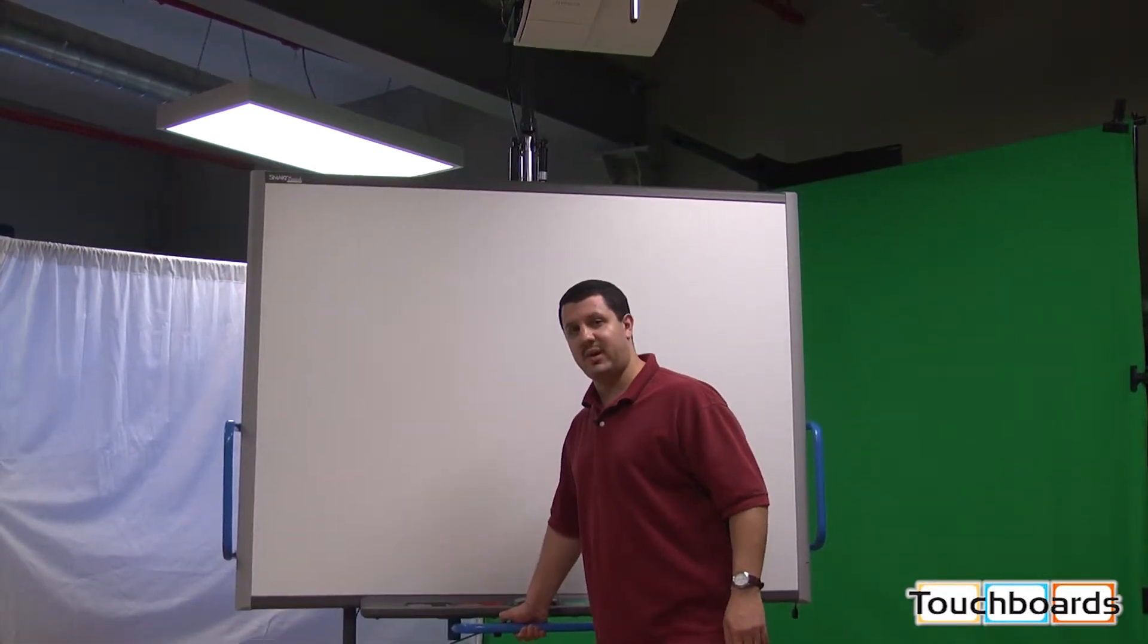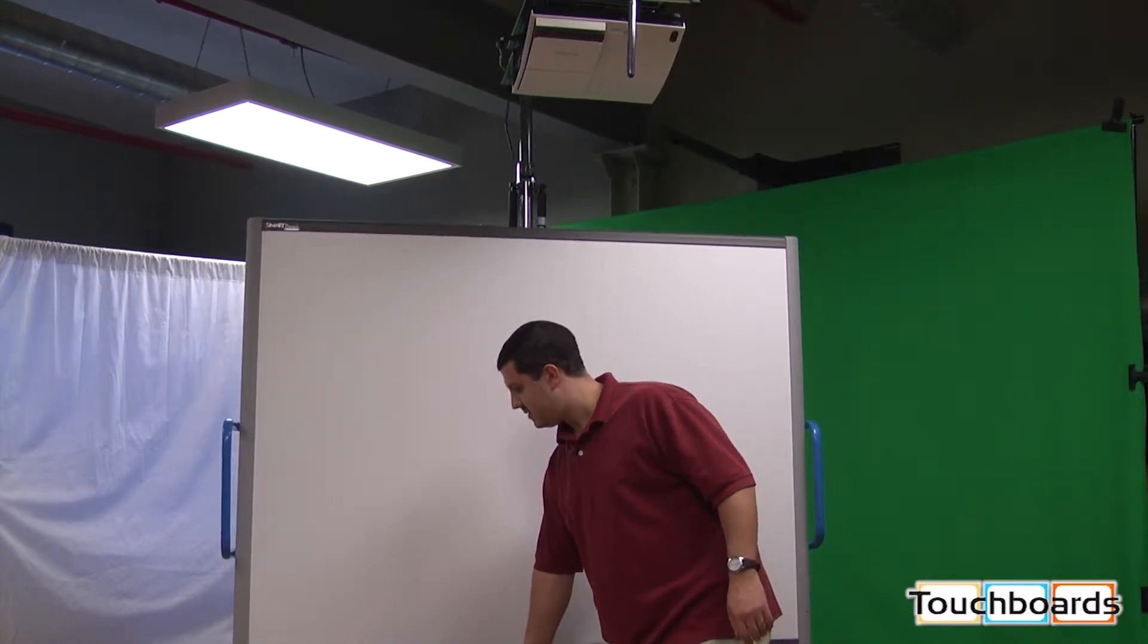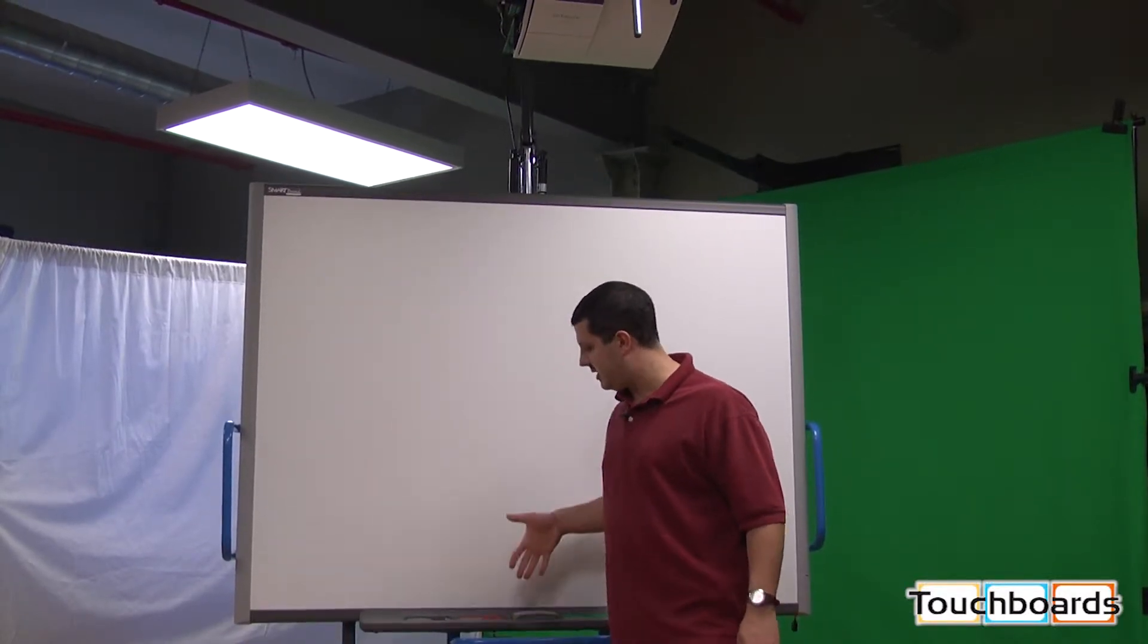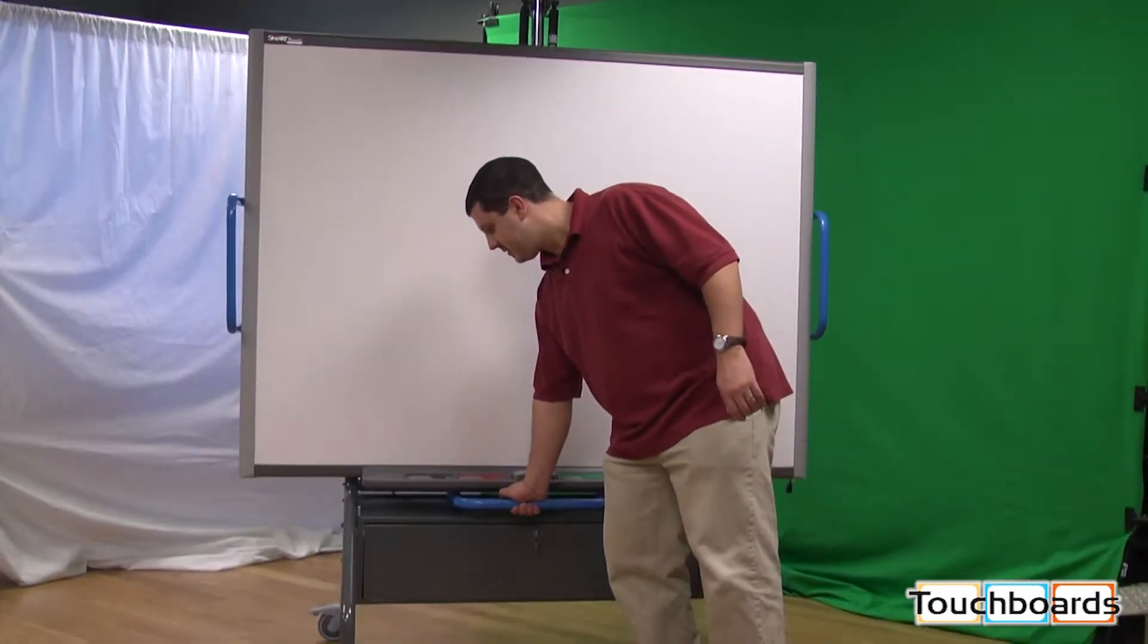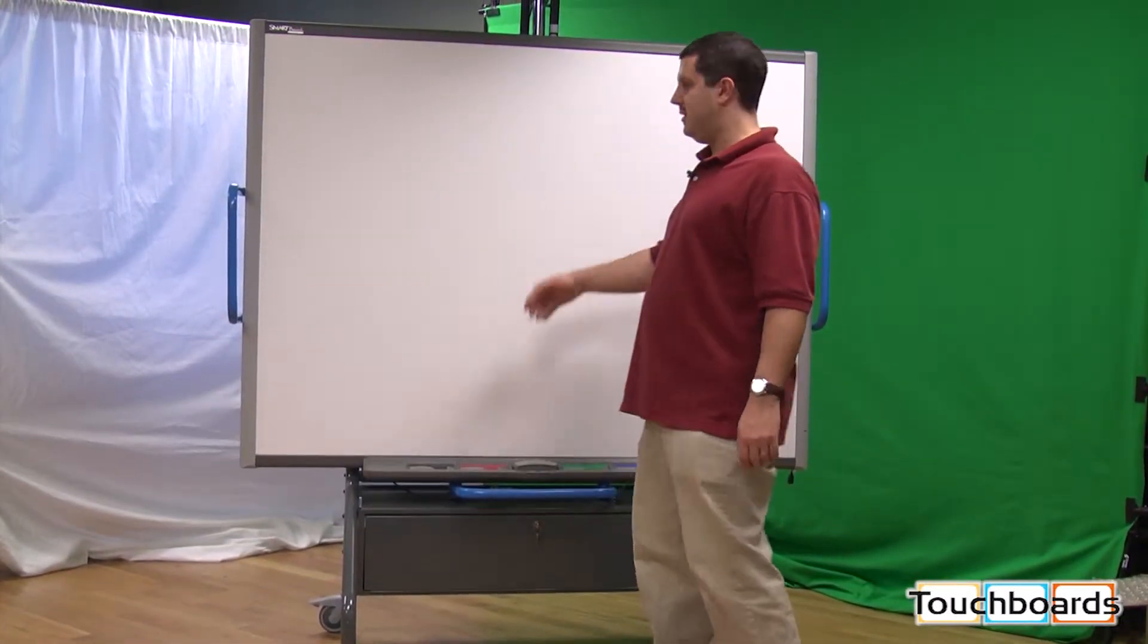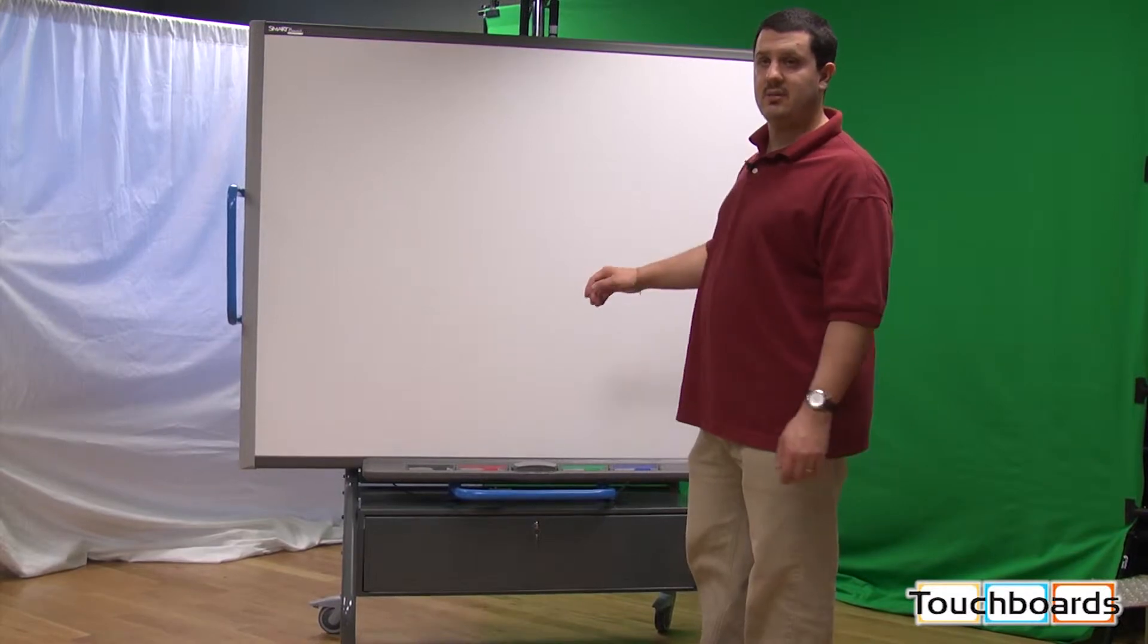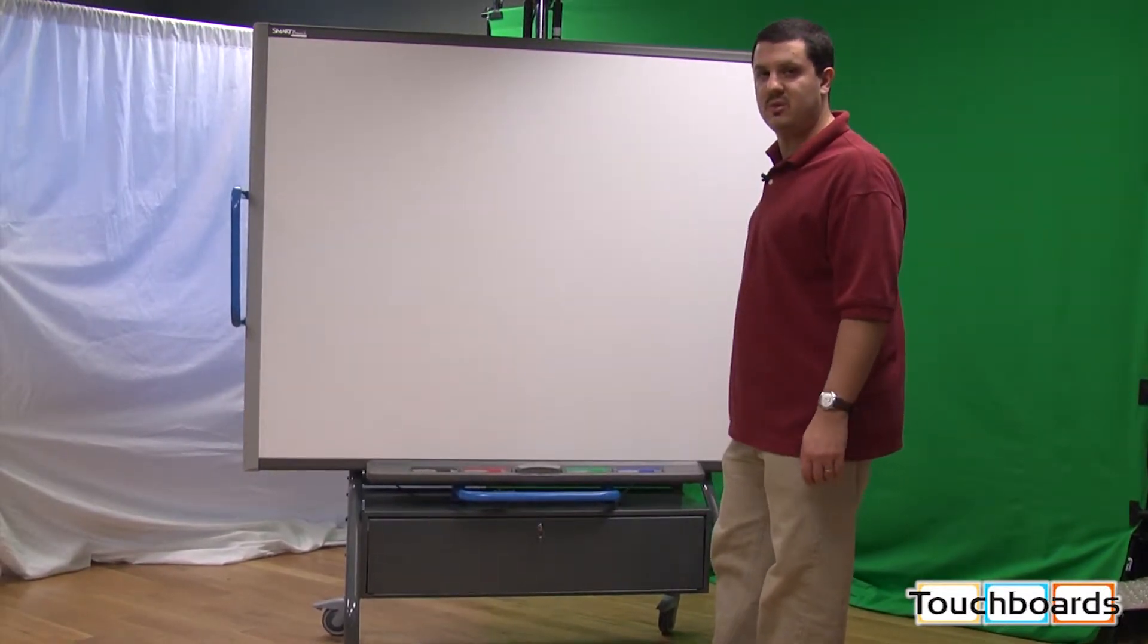You can also bring it right back down. Any height in between, you just let go and it locks in place. You want to bring it back down. Bring it all the way down to the bottom. You can use it at this height, you can roll it around at this height, it's probably best to roll it around at this height.